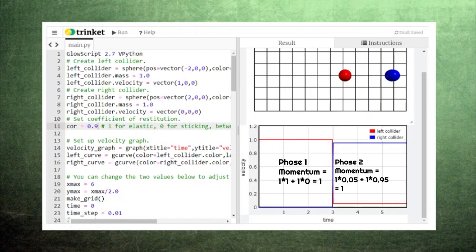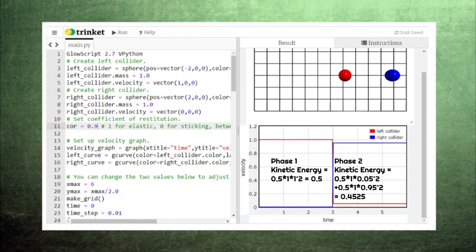If we calculate the momentum of each collider, we can see that the total momentum in phase 1 is the same as the total momentum in phase 2. However, if we calculate the kinetic energy of each collider, we can see that we lost a little kinetic energy during the collision.